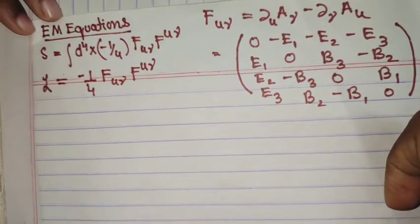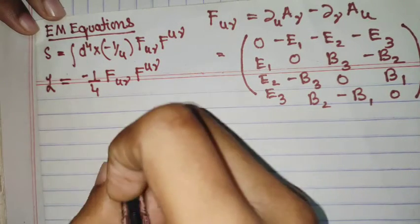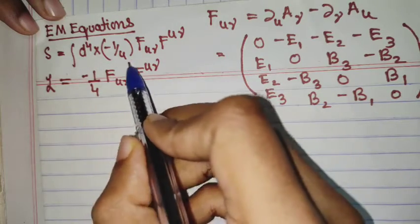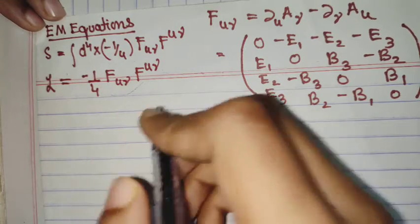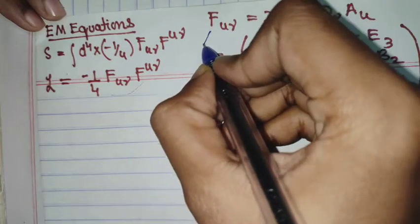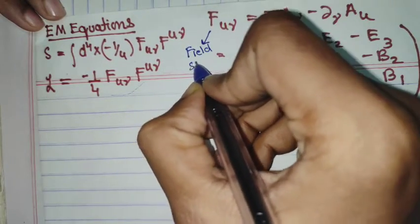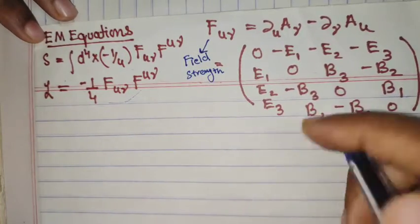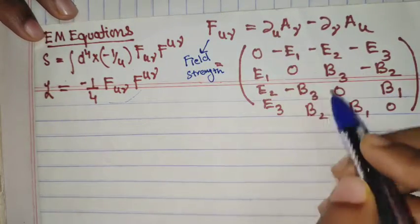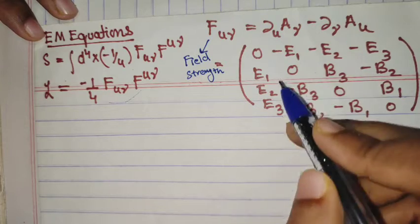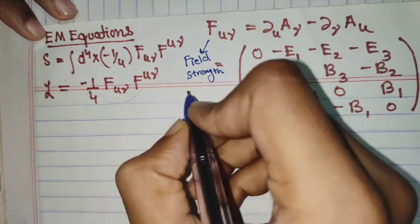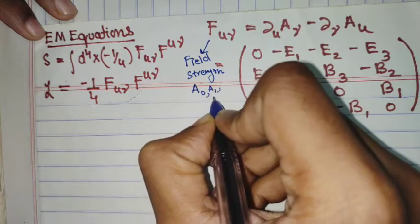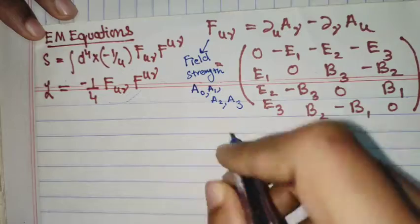In this video we will be trying to derive the electromagnetic equations, two of them, from the given Lagrangian of the electromagnetic field. This is the field strength tensor — a two-form — and its representation in matrix form. In this Lagrangian, there are four fields: A0, A1, A2, and A3.